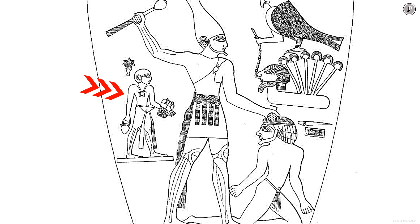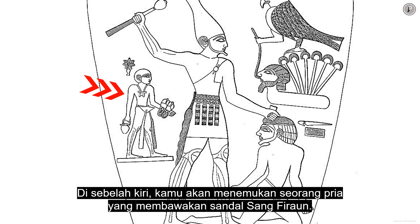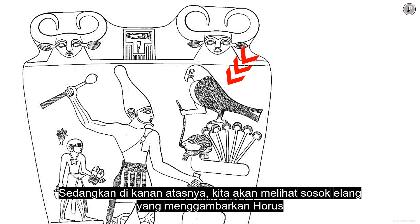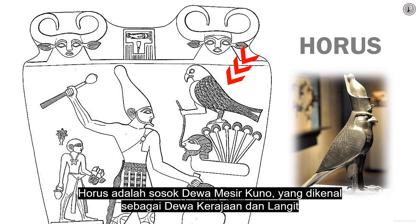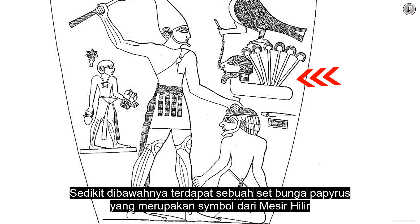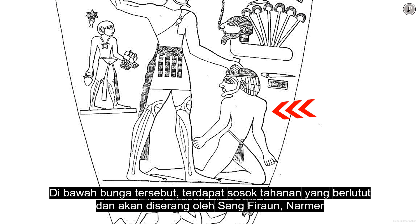On the left side, you will find a man carrying the pharaoh's sandals. While on the top right, we will see an eagle that depicts Horus, the ancient Egyptian god known as the god of the Kingdom and Heaven. Slightly below that is a set of papyrus flowers, a symbol of Lower Egypt. Under the flower, there is a figure of a kneeling prisoner that would be attacked by the pharaoh, Narmer.